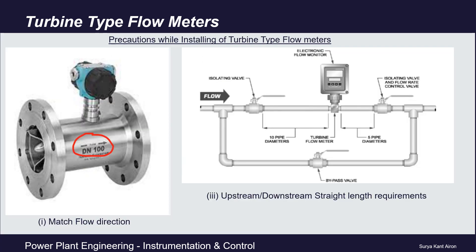Coming to the installation guidelines: first, we have to match the flow direction with the arrow mark on the turbine type flow meter. Second is the straight length requirement — the straight pipe section before the turbine flow meter should be at least 10 times the pipe diameter, and downstream should be at least 5 times the pipe diameter. For example, if the pipe diameter is 100 mm, the upstream straight length requirement would be 1000 mm and downstream would be 500 mm.